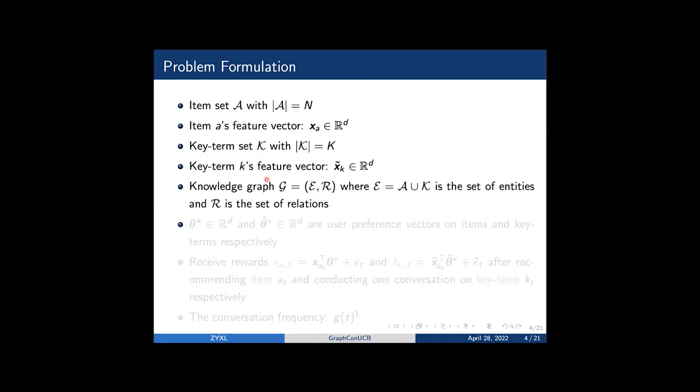We first assume the agent is revealed to a knowledge graph g equals e r, whereas e is a set of entities and r is a set of relations.